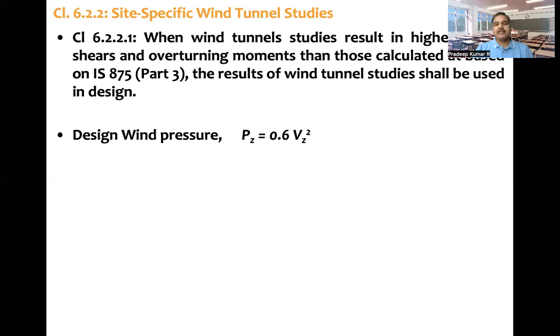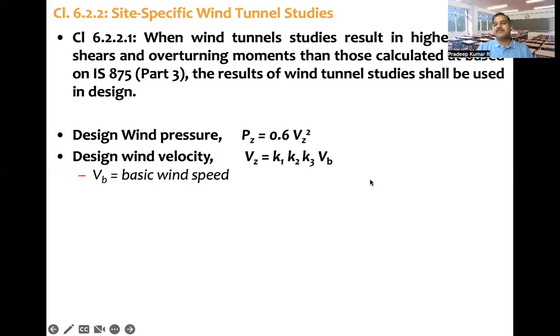Briefly I'll explain how to get forces using IS 875. Design wind pressure will get converted into force—story force, story shear, and also overturning moment. Pressure is calculated based on this formula: 0.6 multiplied by Vz whole square. Vz is based on this empirical expression: K1, K2, K3 factors, and Vb is basic wind speed.